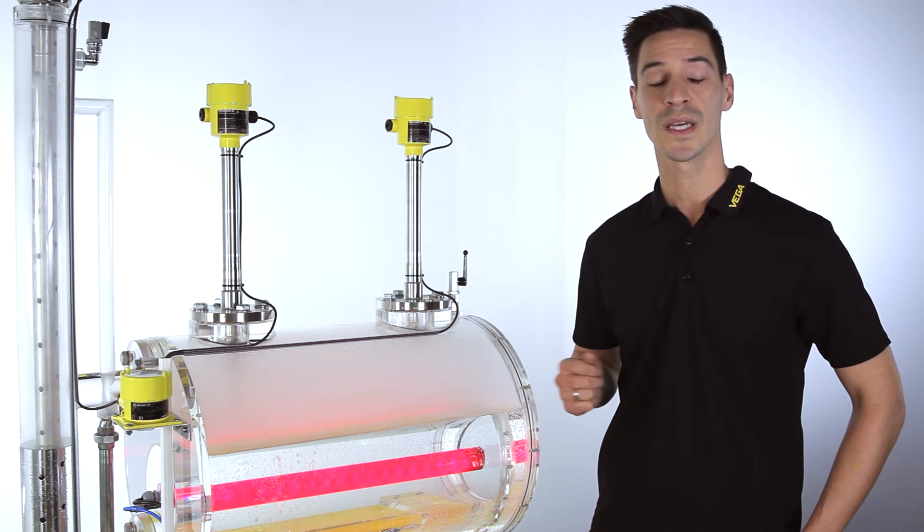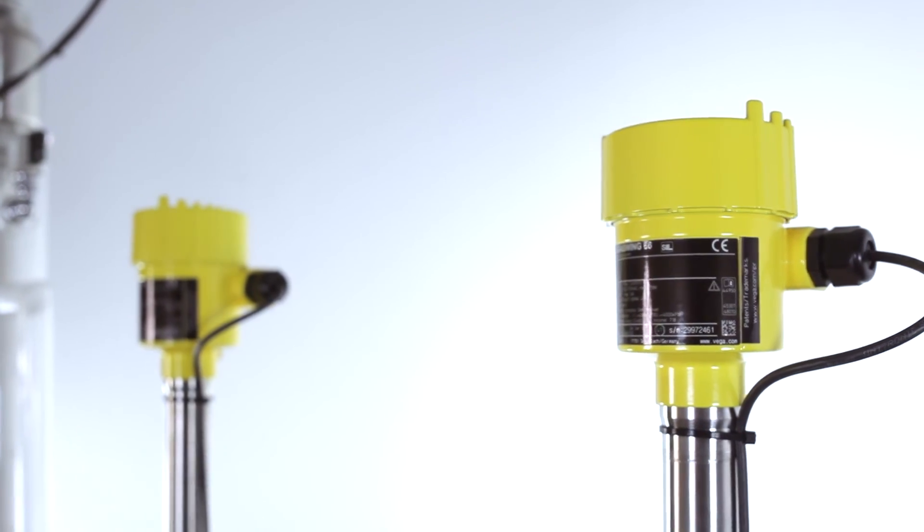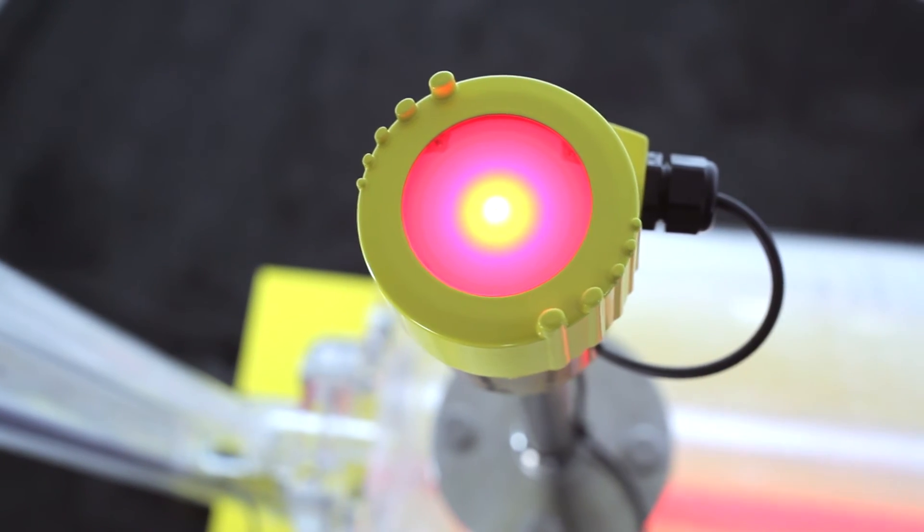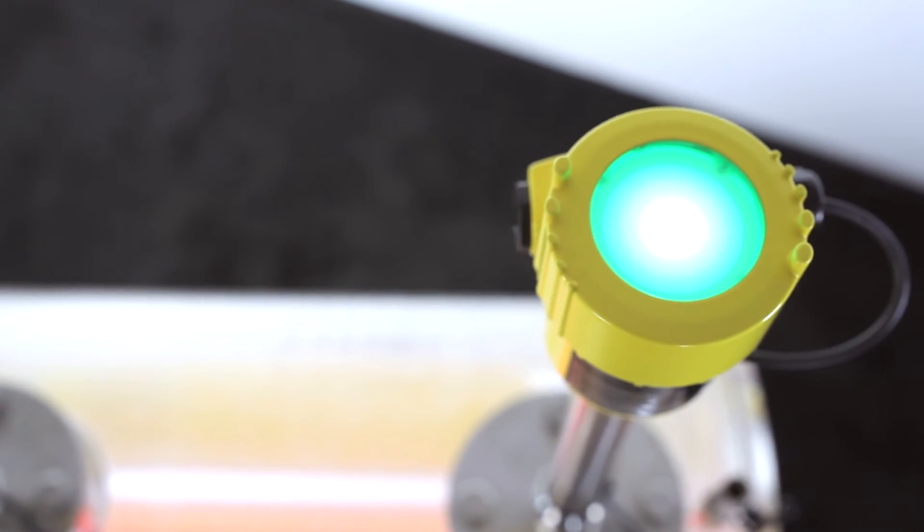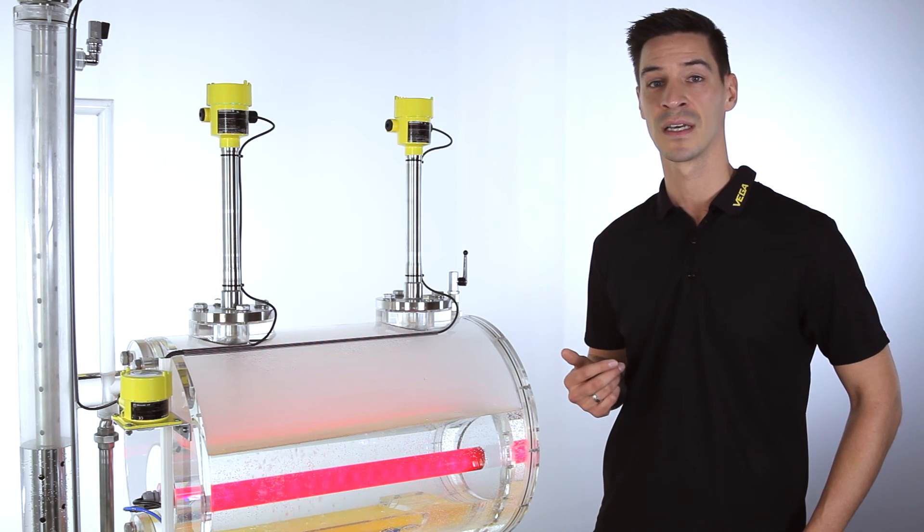Here Vega is the only supplier who can offer the VegaSwing 66, the vibrating point level switch for extreme process conditions. Now it is possible to use the advantages of a vibrating point level switch also in a steam boiler as a safety relevant limiting device.